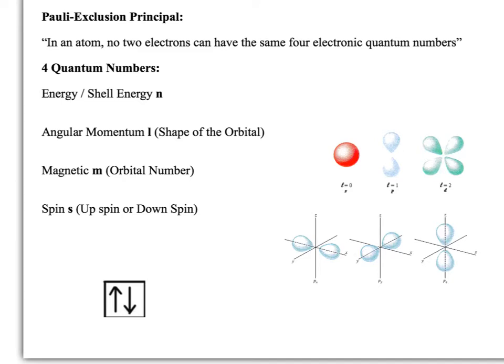There's something called the Pauli Exclusion Principle. What this says is that in an atom no two electrons can have the same four electronic quantum numbers. So the first question is what are those quantum numbers before we can start to use it.